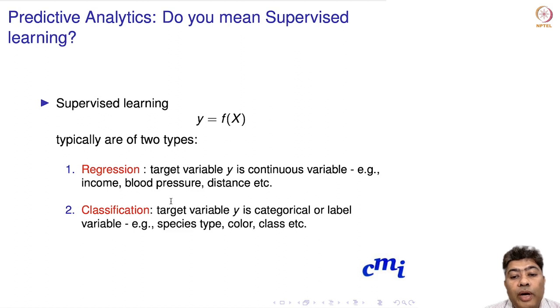Classification, on the other hand, is when the target variable is categorical or a label variable. For example, based on the features of an animal, you want to predict the species type or subspecies. Or you want to predict the color of the car that will be most bought in the market. Whenever the target variable is categorical, it's a classification problem. If your target variable is continuous, it's a regression problem.